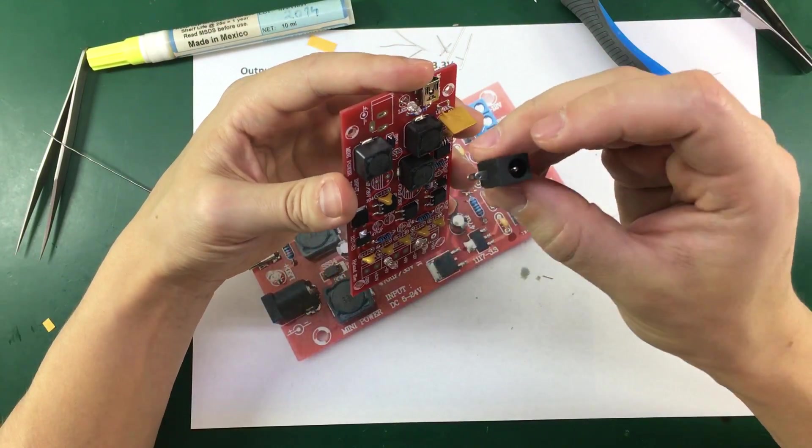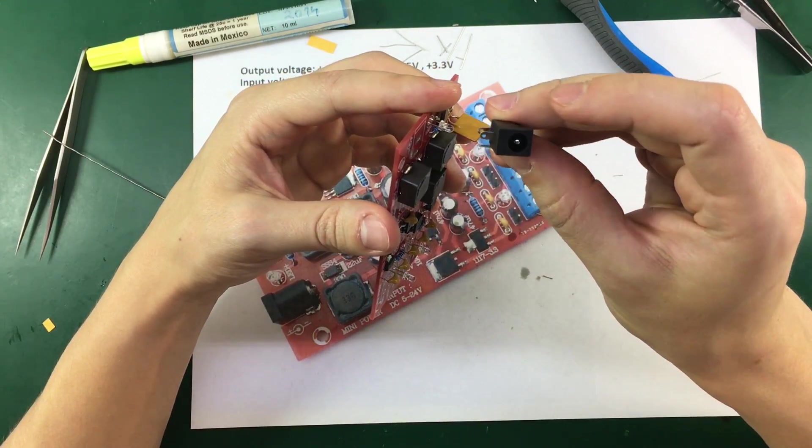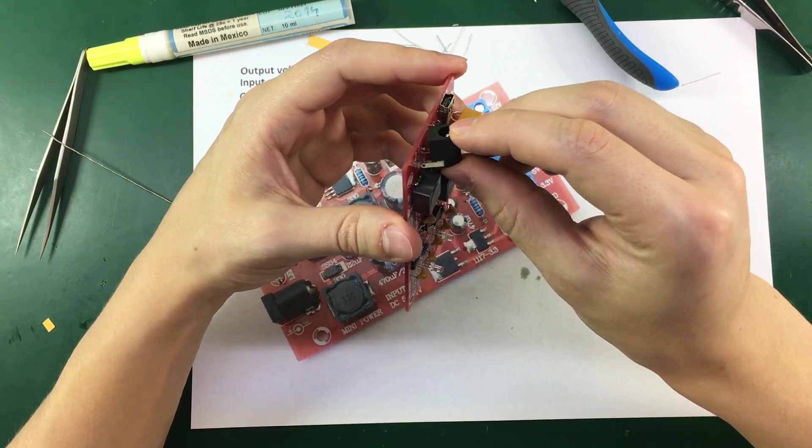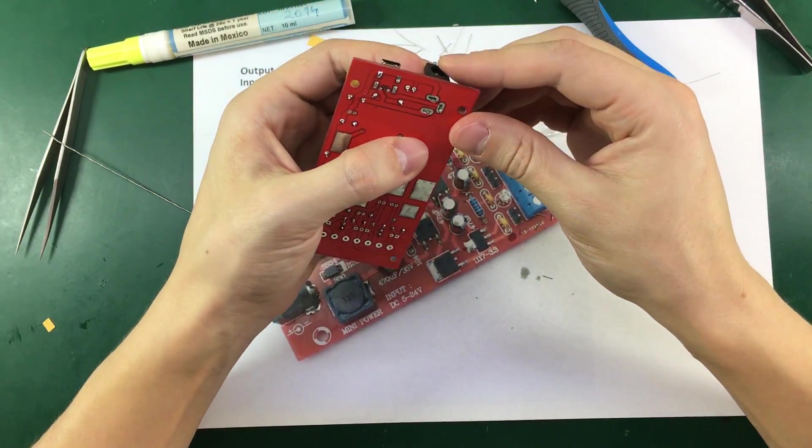Next I also solder in the DC input jack. This is your standard 2.5mm center positive DC jack.